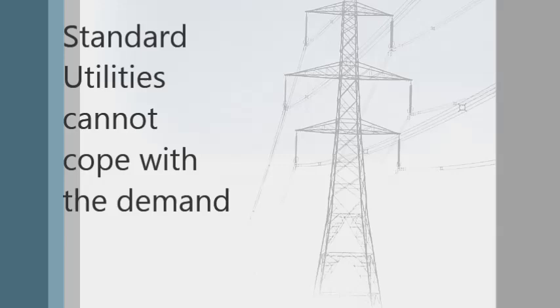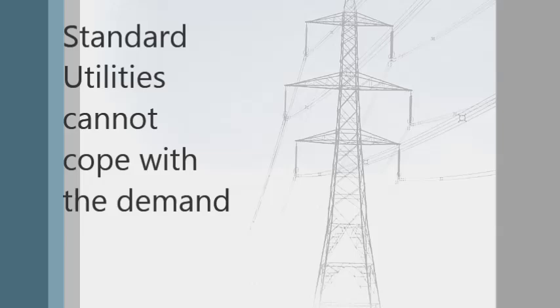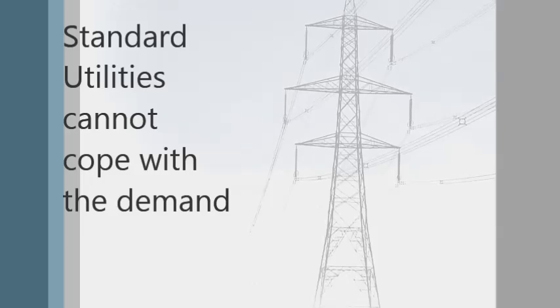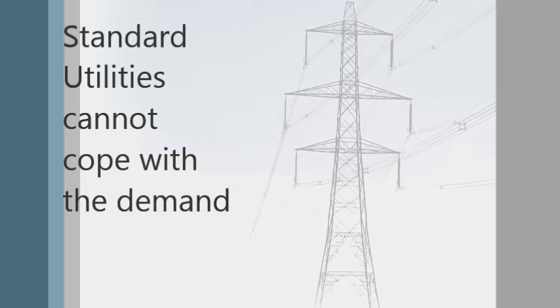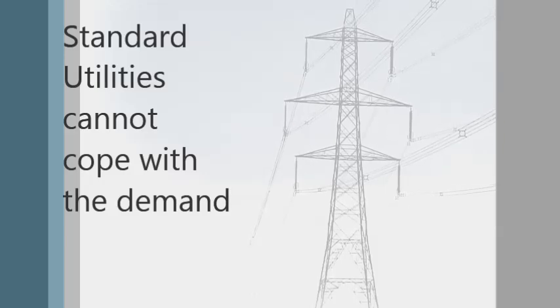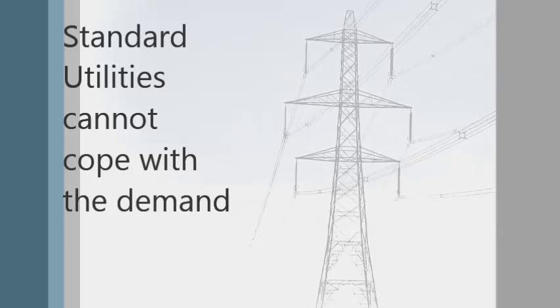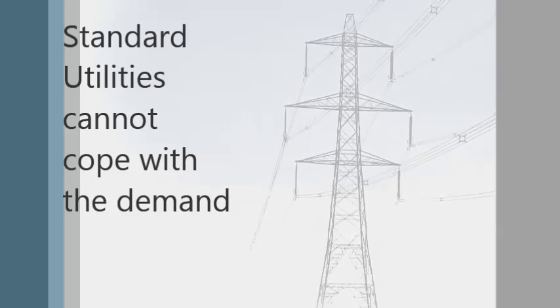Standard utility providers have trouble servicing these communities for various reasons. Firstly, these communities are typically far from the national grid, and it's expensive to connect them. Secondly, households in these areas are scattered far apart, sometimes over difficult terrain. Thirdly, these communities are poor, making it difficult to finance the infrastructure required to connect them to the grid. Fourthly, cable theft is a massive problem in South Africa.